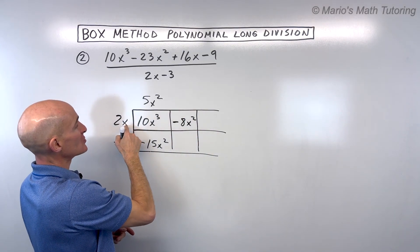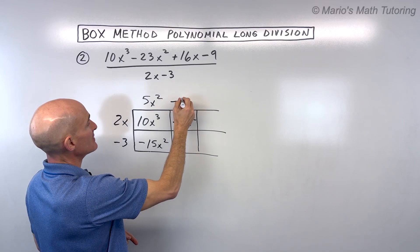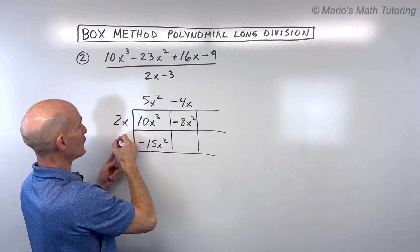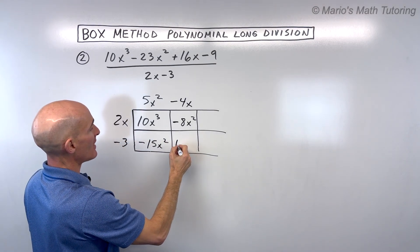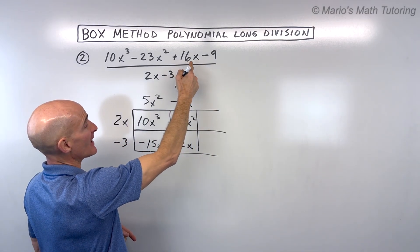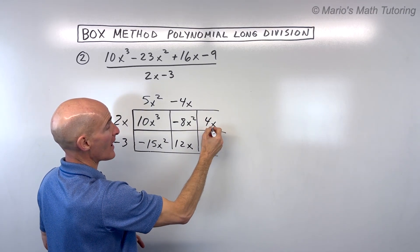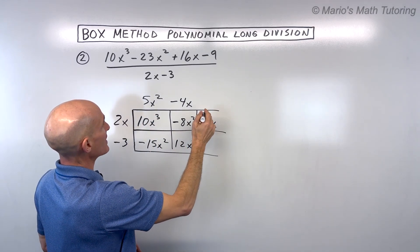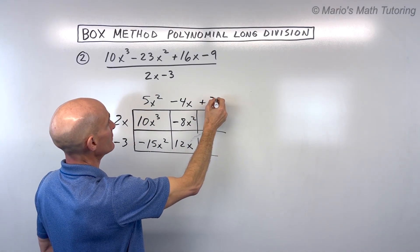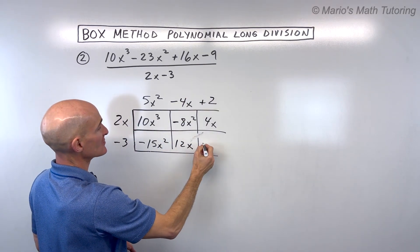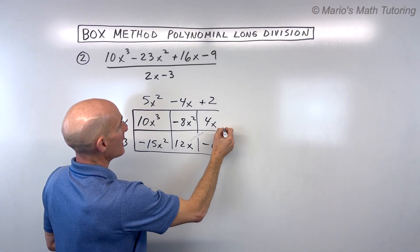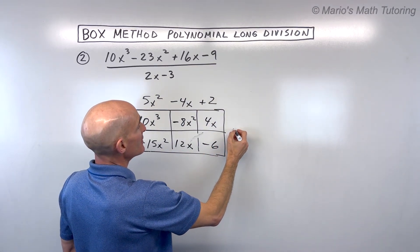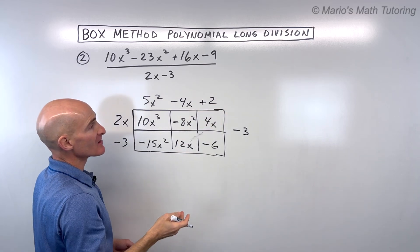So what times 2x equals negative 8x squared? That's negative 4x. Distributing gives us negative 8x squared, and negative 4x times negative 3 gives us positive 12x. We have 16x, so we need another 4x. What times 2x is 4x? That's just 2. Distributing gives us 4x, and 2 times negative 3 gives us negative 6. We have negative 9 here and negative 6 here, which means we need another negative 3. But we've already reached the end — this is a constant, and we can't go lower than a constant.